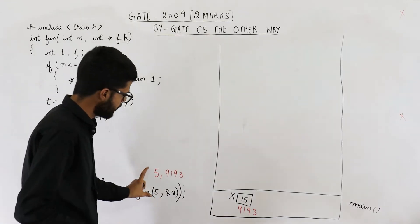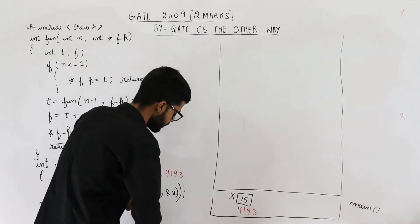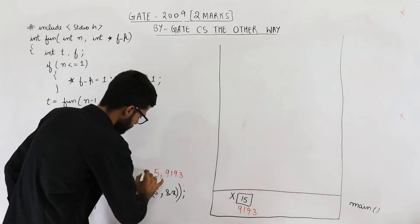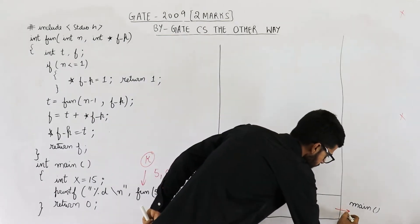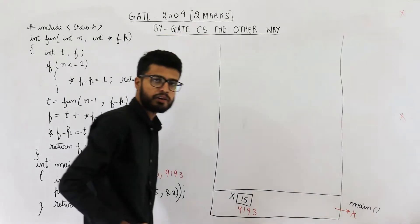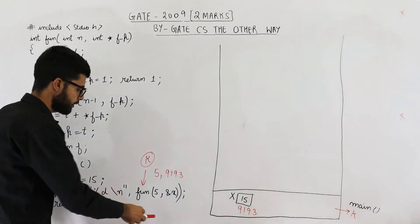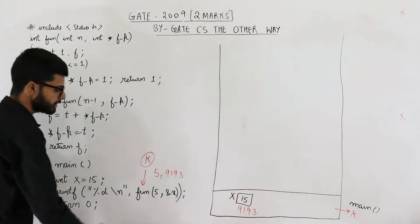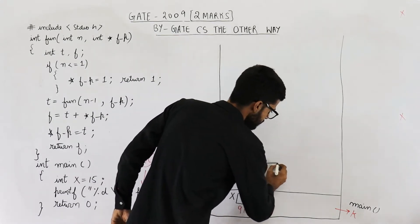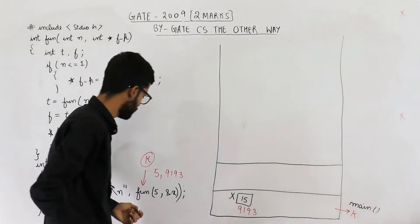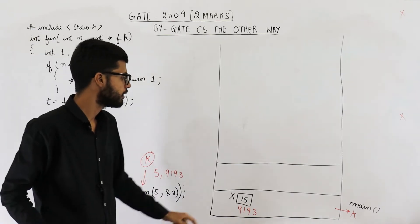After coming back from this function call, we have to resume execution from this line only. Suppose this is line number k — so I am noting that after returning from this function we resume from line number k. Whenever a function is called, an activation record will be pushed onto the stack. Suppose this is the activation record pushed for function fun.